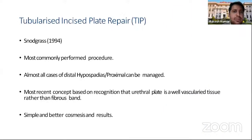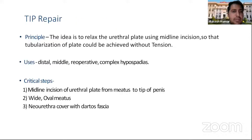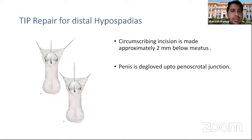The TIP procedure, described by Snodgrass in 1994, is the most commonly performed procedure today. Almost all cases of distal and proximal hypospadias can be managed by this procedure. It is based on the recognition that the urethral plate is well-vascularized tissue rather than a fibrous band. The principle is to relax the urethral plate using a midline incision so that tubulization of the plate can be achieved without tension. In TIP repair, a circumscribing incision is made approximately 2 cm below the meatus and the penis is deglobed up to the penoscrotal junction.